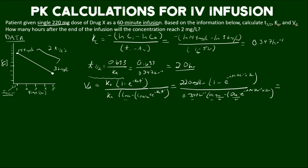Let's plug and chug all of this. You have to be careful — I would do it in sections: start with the exponential portion first, subtract from one, multiply by 220, save that answer, then do the denominator the same way. The predose portion equals zero so we skip that part. The result is 12.9 liters. So we've successfully calculated the elimination rate constant, the half-life, and the volume of distribution.